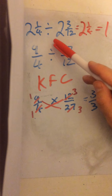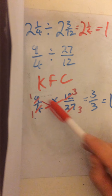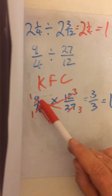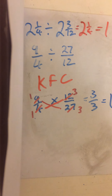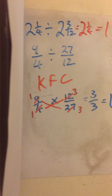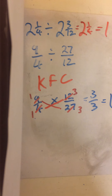So to summarise: convert to an improper fraction, do the KFC for division, do any cross-simplifying, then multiply across. Hopefully you'll be okay to do today's work. If not, go back and do the previous lessons from before Christmas — it's not a big problem going back, as long as you're secure on it. I'll see you all at the next Teams meeting, which I think is tomorrow. Bye!